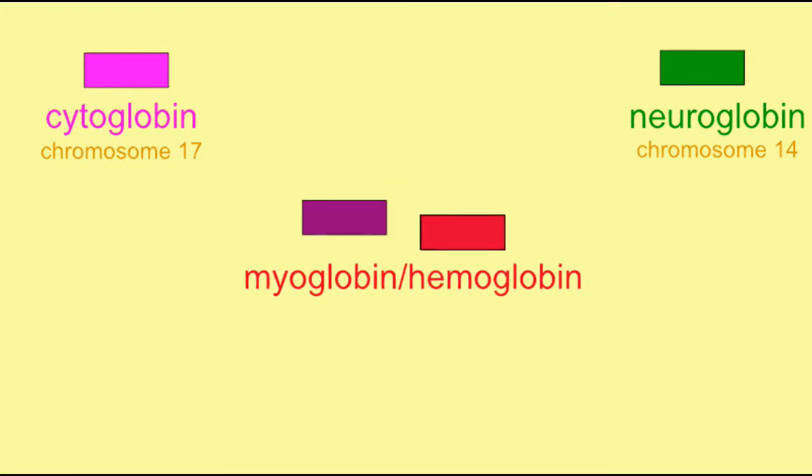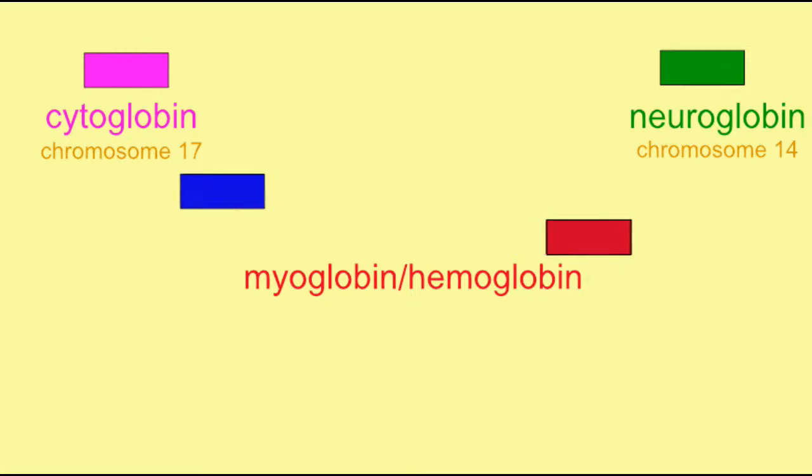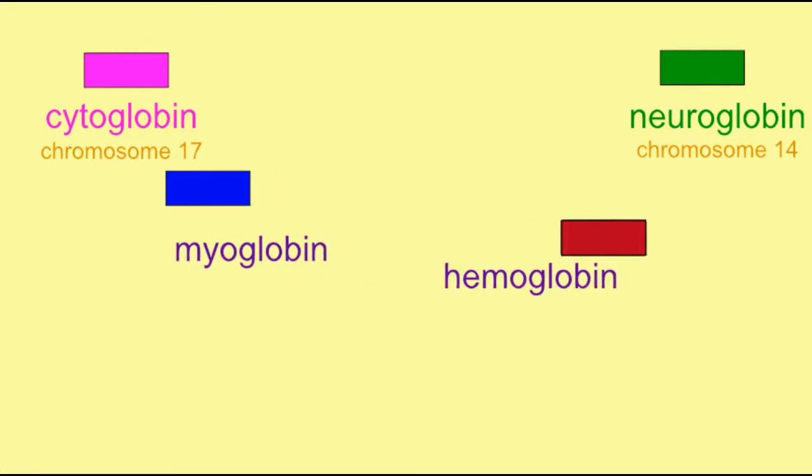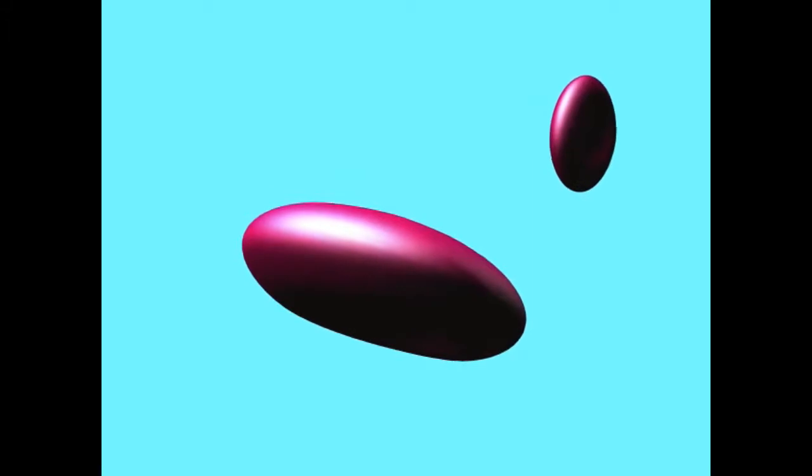One duplication produced myoglobin found in muscle and the hemoglobin found in blood. In invertebrates, hemoglobin can float in the hemolymph or be found inside cells.